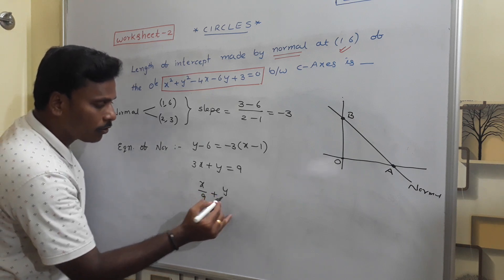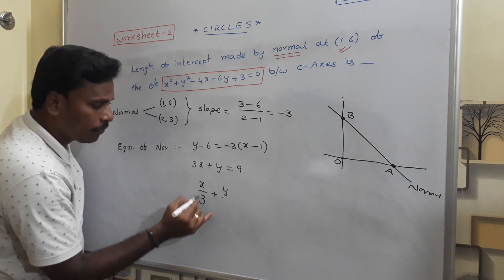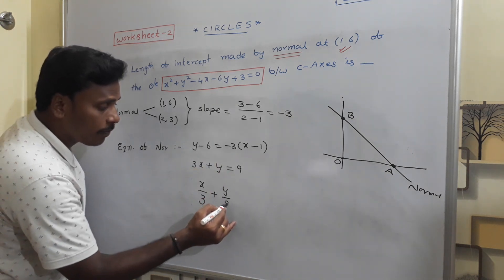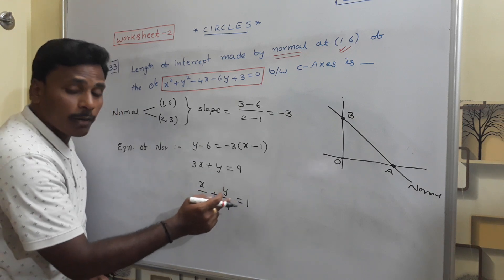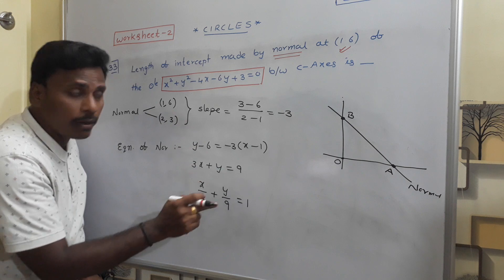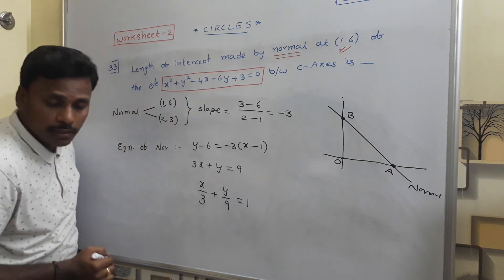3x + y = 9. Intercept formula: x/9 plus... No, no. x/3, right? When we divide everything by 9: x/3 + y/9 = 1. So this x/3 + y/9 = 1 is the normal for the given circle at the point (1,6).